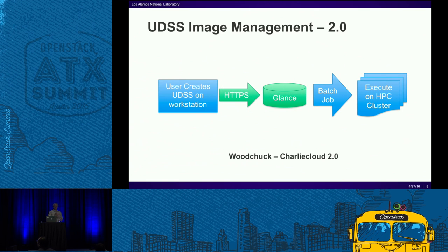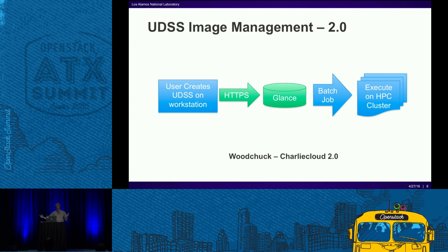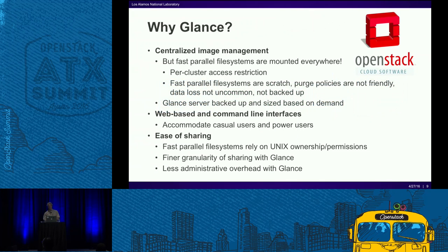So what changes by using Glance? We can put our Glance server in an enclave on the network that users can reach with a web browser from their desktops. They can build their Docker container or virtual machine and upload it through HTTPS to our Glance server. Once it's there, the plugins retrieve something out of Glance, put it on their allocation, and execute it.